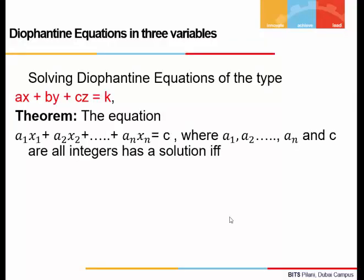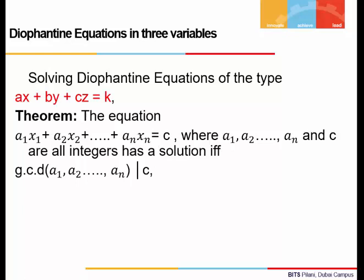Before we begin, we will give one general theorem. The theorem states that if we have a single equation in n unknown variables x1, x2, ..., xn, and the equation is a1·x1 + a2·x2 + ... + an·xn = c, where all the aᵢ's are integers and the right-hand side c is also an integer, then such an equation has a solution if and only if the gcd of all the coefficients aᵢ divides the right-hand side c.